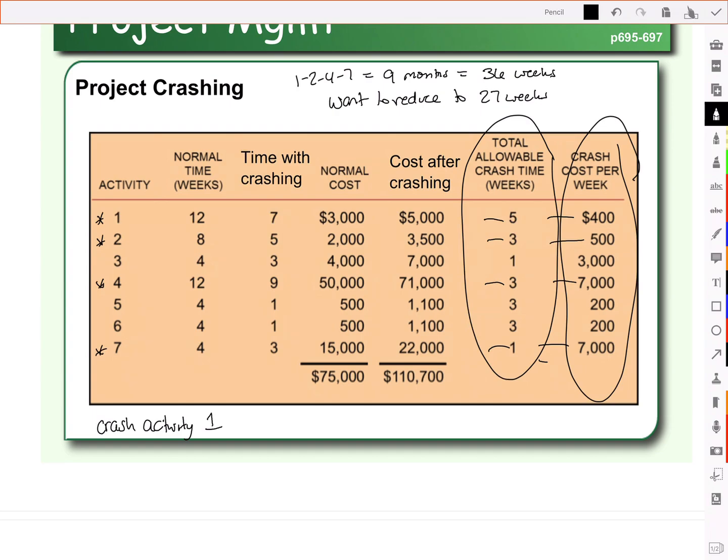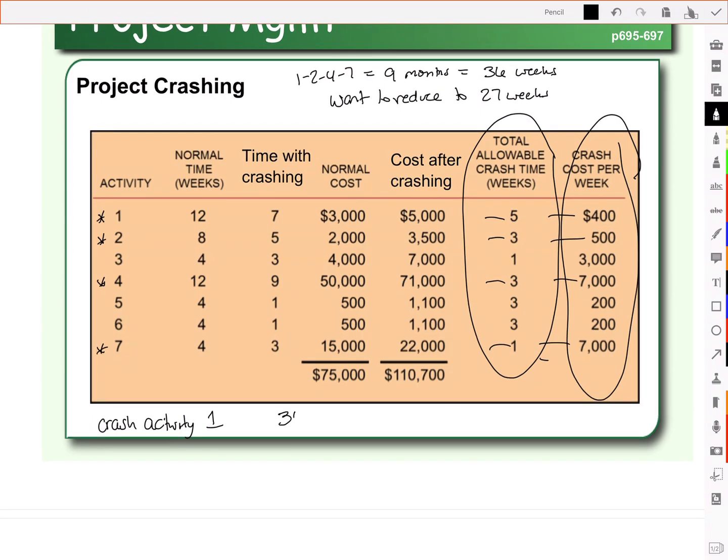So we focus on activity 1, and we can crash up to 5 weeks. So we can go from 36 weeks to 31 weeks, and the cost will be $400 per week to speed it up. So 400 times the 5, 2,000 bucks. Does that get us to 27 weeks? No, we're still short. We're now just at 31. So we need to get down to 27.